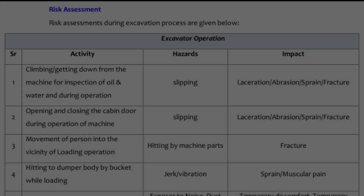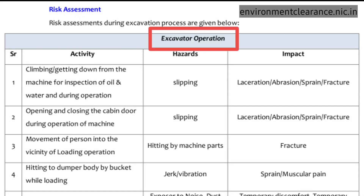For example, I have done the risk assessment for a task — excavator operation. In this, I have listed what are all the activities associated with the excavator operation, what are all the hazards that may be caused due to that activity, and what are all the impacts of that hazard. This is an example of risk assessment of a task.